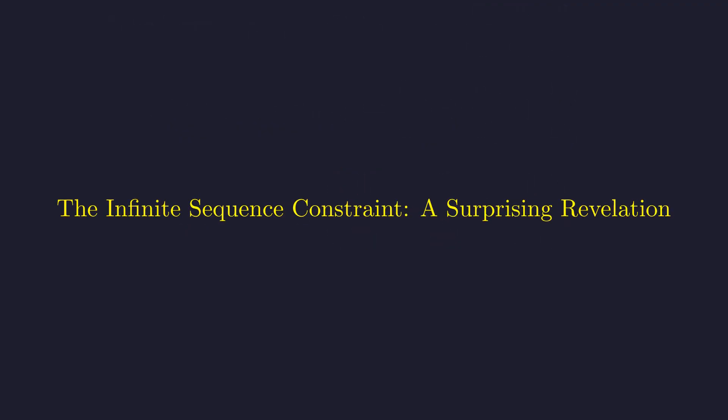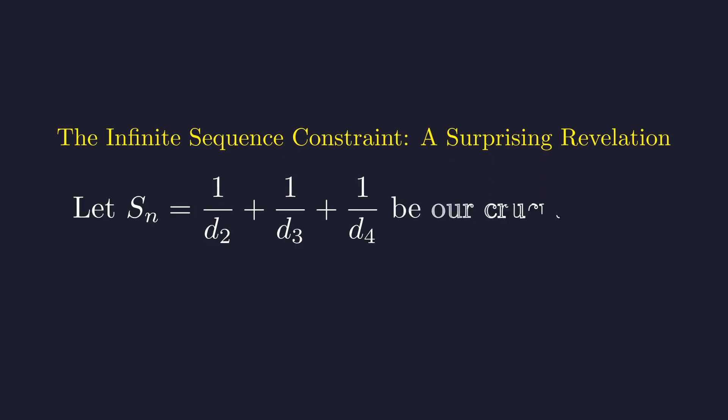The requirement that the sequence is infinite is the central constraint of the problem. We will now analyze what this implies for the multiplicative factor we just found. Let's define S_n as the sum 1/d2 + 1/d3 + 1/d4, where the d's are divisors of a_n. The sequence grows if S_n is greater than 1, shrinks if it is less than 1, and remains constant if it equals 1.